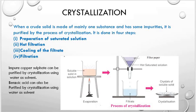Choosing a solvent: the solvent to be used for crystallization must have certain properties. First, the compound to be crystallized should be sparingly soluble in the solvent at room temperature but highly soluble at high temperature. Second, the solvent should not react chemically with the compound to be purified. Third, the solvent should be volatile so it can be removed easily. Examples of commonly used solvents include water, ethyl alcohol, methyl alcohol, acetone, and ether.